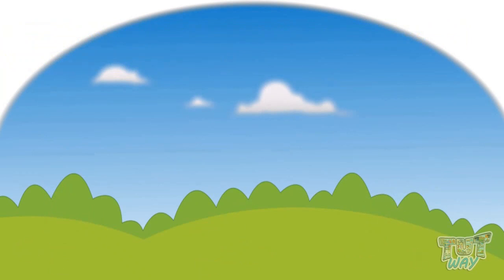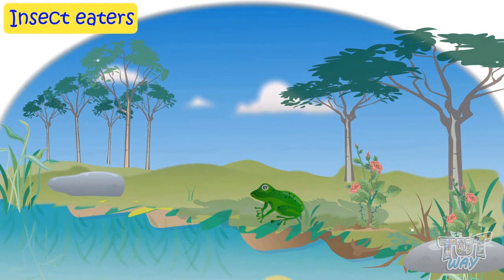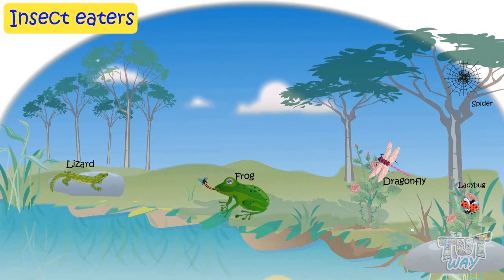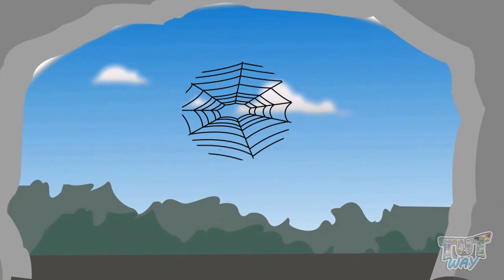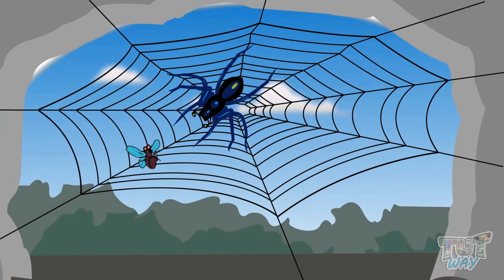Some animals have a sticky tongue — they use it to catch insects for food. These animals are called insect eaters. Lizards, frogs, spiders, dragonflies, and ladybugs are examples of insect eaters. A spider can trap an insect in its web; once an insect gets trapped, it becomes food for the spider.